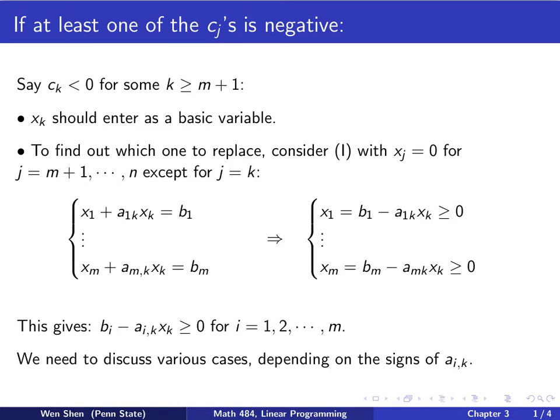So the constraints for the i-th equation would be b_i minus a_ik x_k bigger than 0 for i from 1 to m. So we know that now we have an inequality. If you want to find the exact condition for x_k, then it depends on the sign of this a here. Because if you want to write x_k related to b_i, you will have to divide both sides by this quantity. And if it's a negative sign, then you have to change the inequality. So it matters, the sign of this guy.